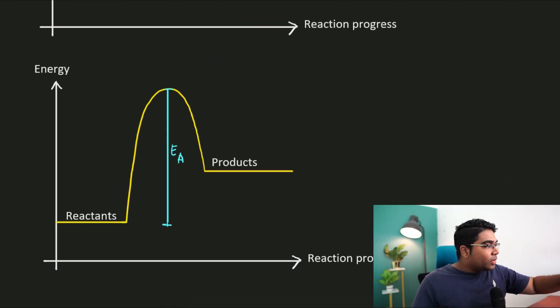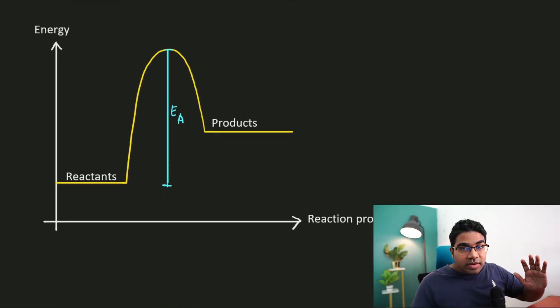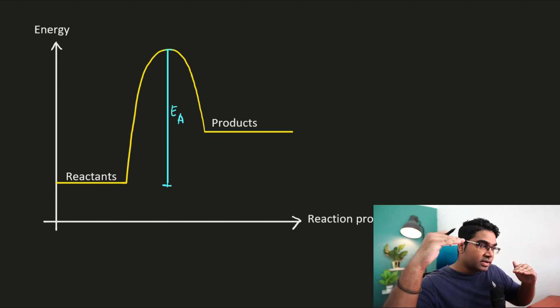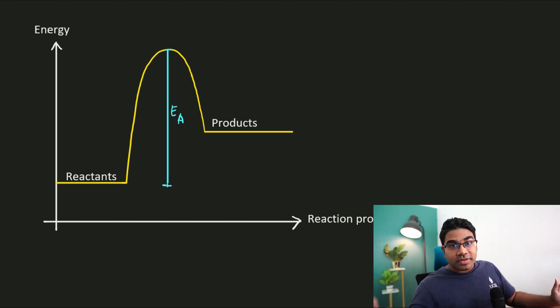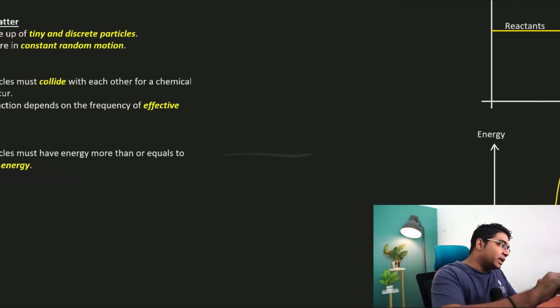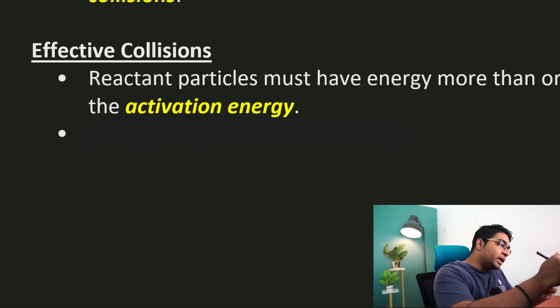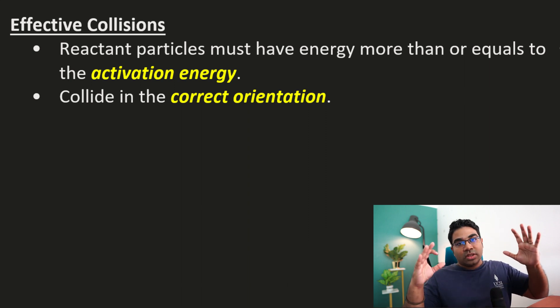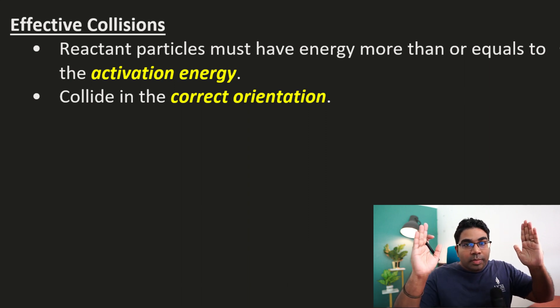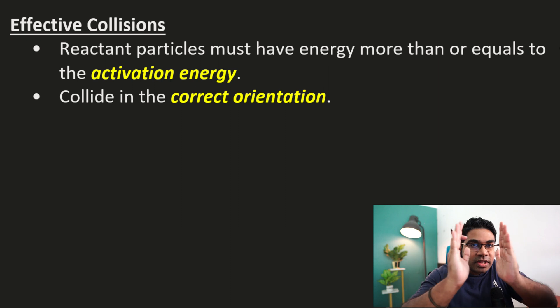This is how an endothermic reaction happens — the reactant energy is less than the product energy, but that's another topic. So once the reactant particles have enough energy and they collide together, there is still another condition that needs to be met: they must collide in the correct orientation — the proper positioning and arrangement.